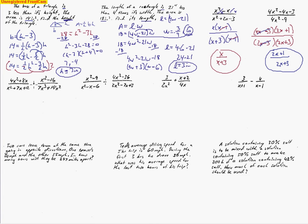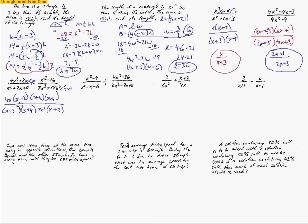The next problem is multiplying rational expressions. Always take out common factors first — you have to factor in order to reduce. Taking out 4x gives x plus 2. The next numerator is a difference of squares, factoring to (x minus 4)(x plus 4). The trinomial factors to (x plus 3)(x plus 4). The denominator has a common factor of 7x squared, leaving x plus 2 after division. Canceling x plus 4, x plus 2, and one x, we're left with 4(x minus 4) over 7x(x plus 3). You can leave it like that or multiply it out.